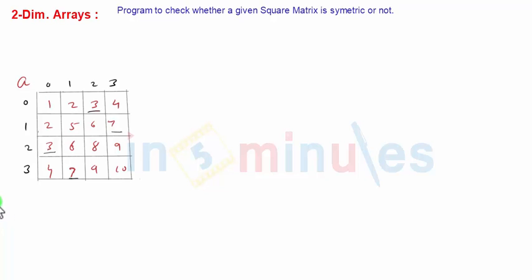Now whenever in a collection you have to check for are all the values matching, in such cases instead of checking for a matching we check for opposite, that is if there is anywhere mismatch. Because if anywhere any element is not matching with the other corresponding element we can make sure that the matrix is not a symmetric matrix.